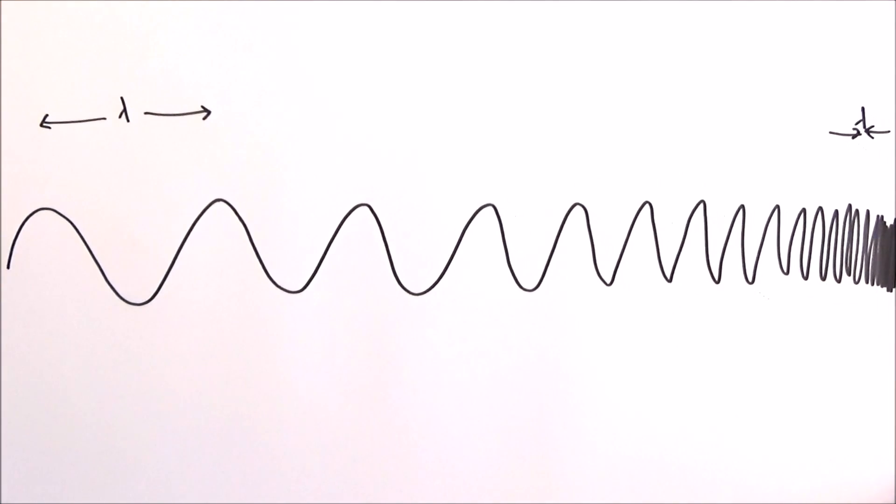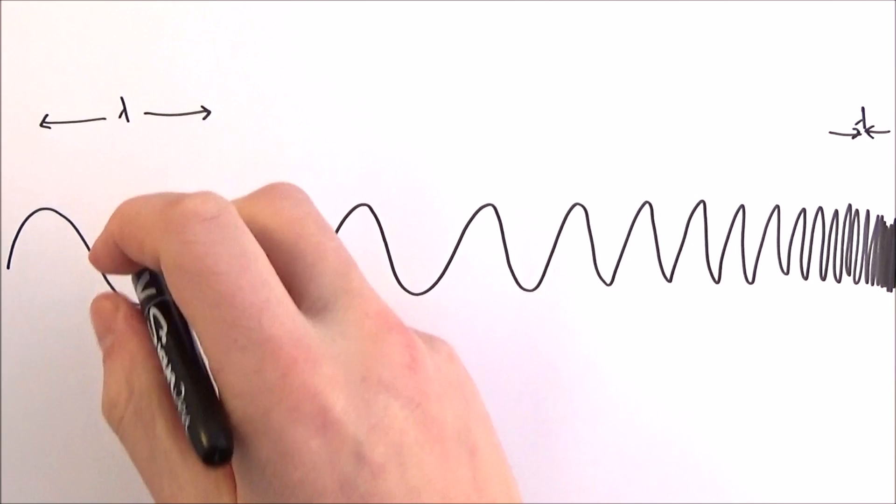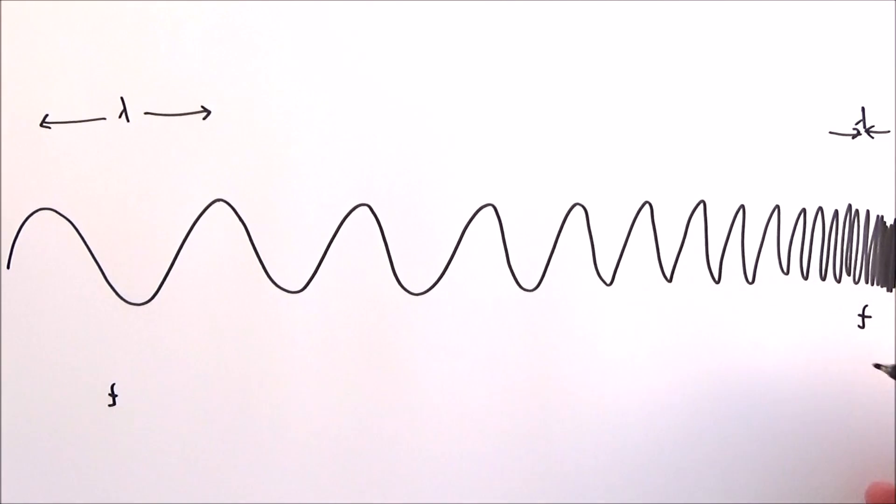We can also think about the frequency. So here we have a low frequency because we have such a long wavelength, whereas here we have a high frequency. It's higher than that one because they've got such a short wavelength. So there's a huge amount of wave cycles per second.